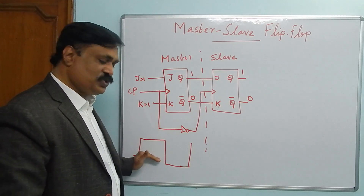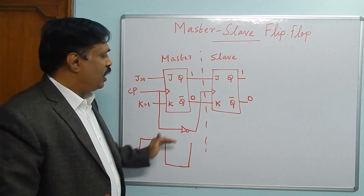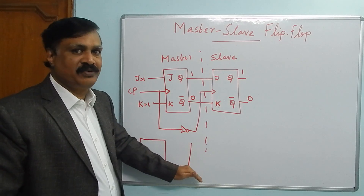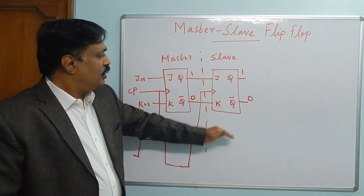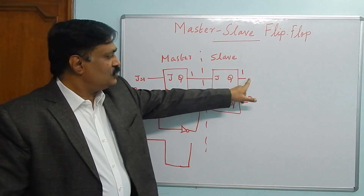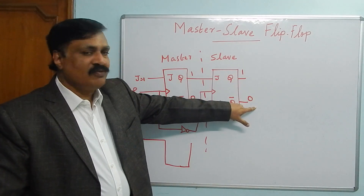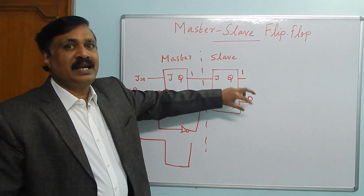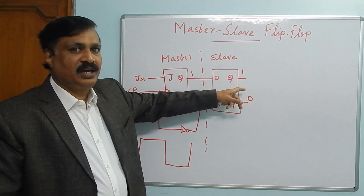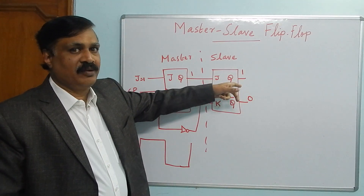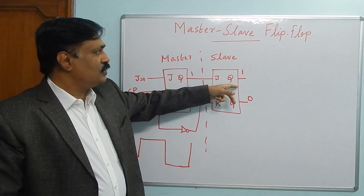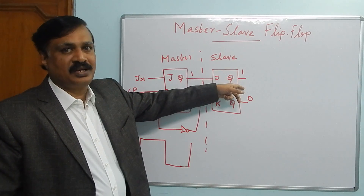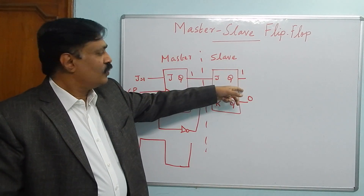The slave copies the action of the master. Therefore it is called master-slave. The master responds to positive triggering and the slave responds to negative triggering. Due to this, the toggling will not occur again and again, meaning there is no race around condition here.